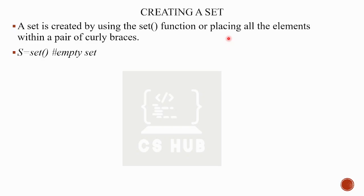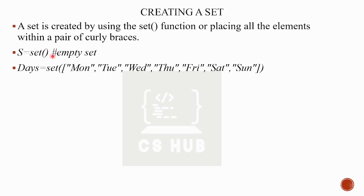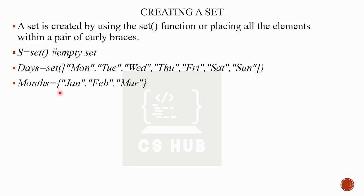Set uses curly brackets with comma-separated values — that is the set syntax. Dictionary uses curly braces where each item is a key-colon-value pair, whereas Set uses curly braces with just values. We can also use the set() constructor method. For example: months = {'Jan', 'Feb', 'March'} — this creates a set using curly brackets and comma-separated values.